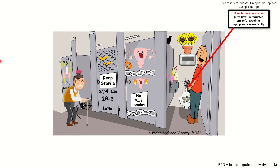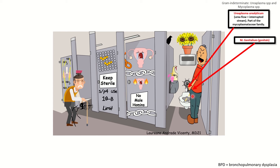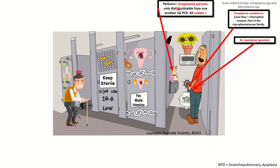Ureaplasma urelyticum is represented in this sketch by the flowing urine here in yellow, and the interrupted stream for the 'lyticum' portion of the name. These bugs are part of the mycoplasma modici family, and we have mycoplasma species — mycoplasma genitalium, represented by the genitals here on this gentleman urinating. We also have ureaplasma parvum, which is only distinguishable from ureaplasma urelyticum via PCR, and so we're representing that species by the parfum, or the perfume, within the stall here.